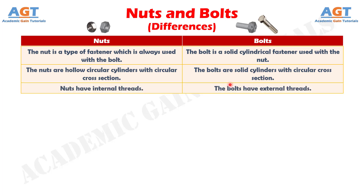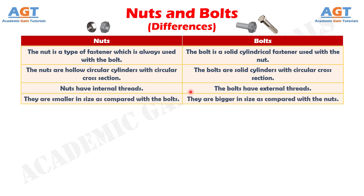Number 3: Nuts have internal threads, whereas the bolts have external threads. Number 4: The nuts are smaller in size as compared with the bolts, whereas bolts are bigger in size as compared with the nuts.